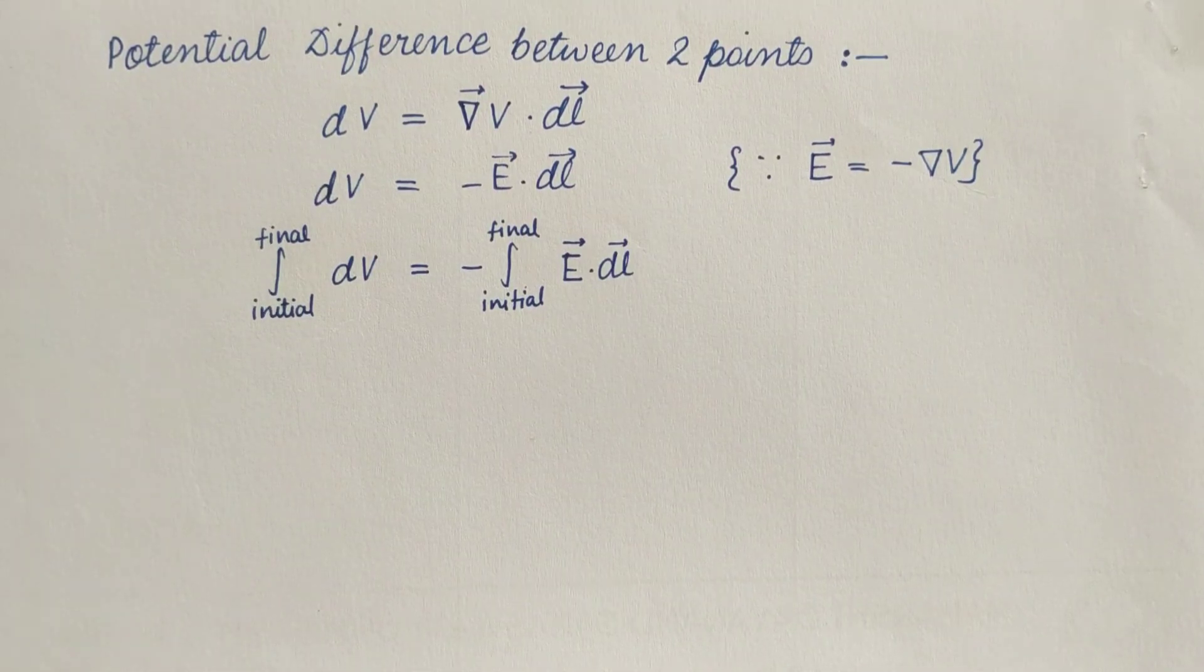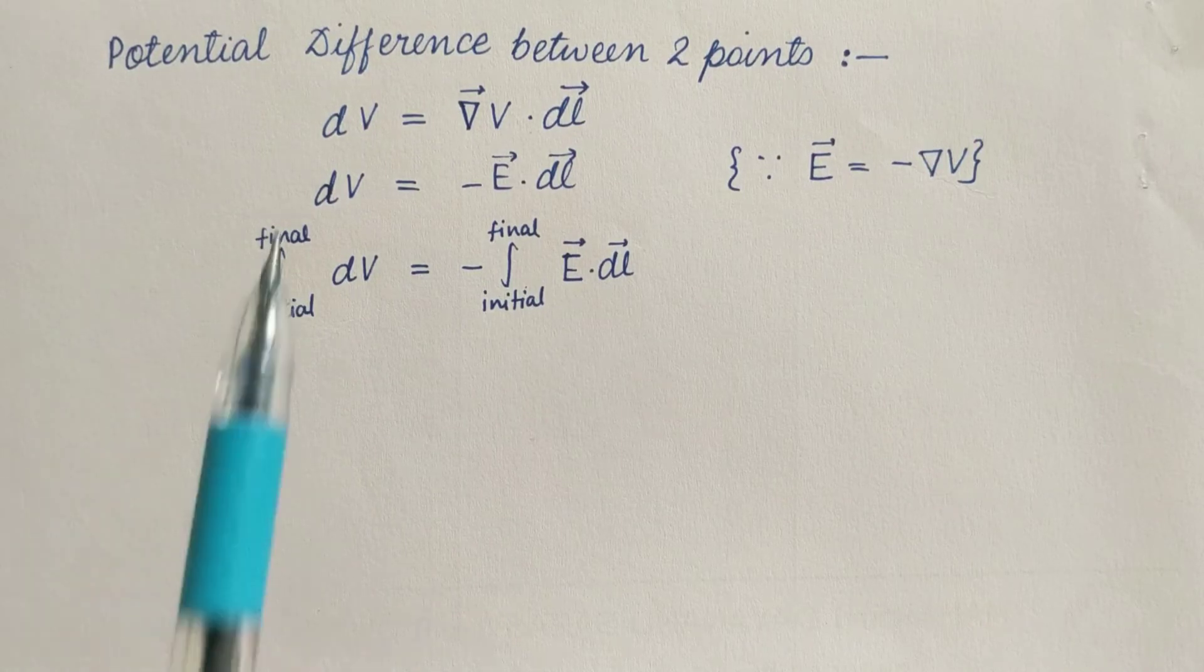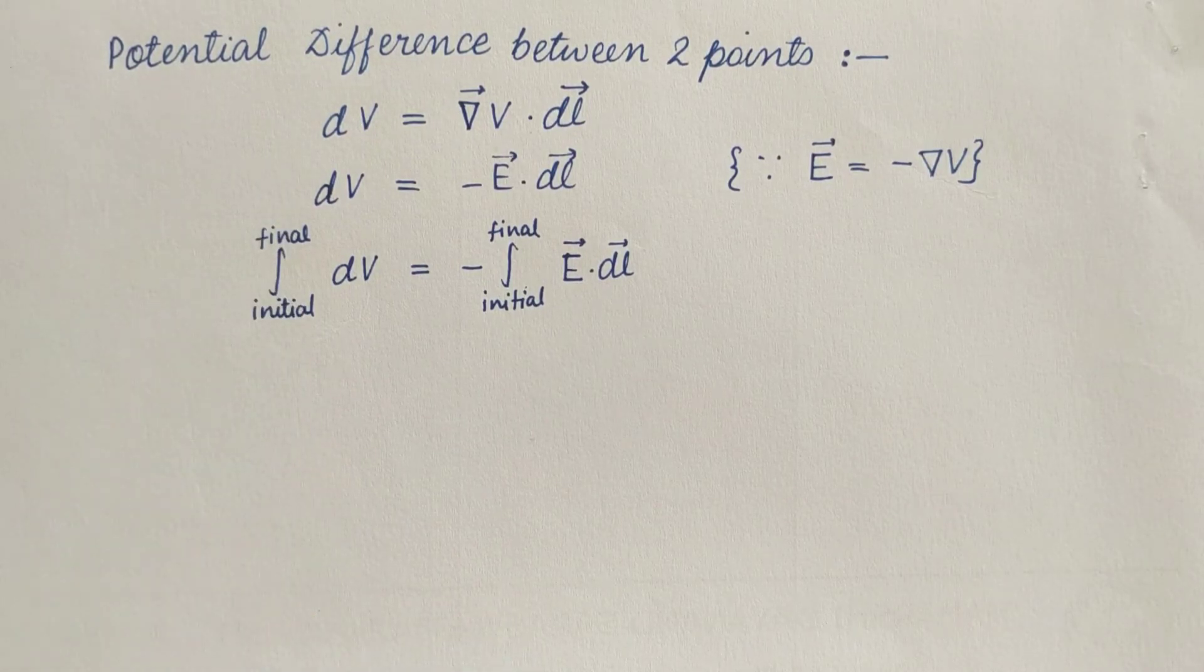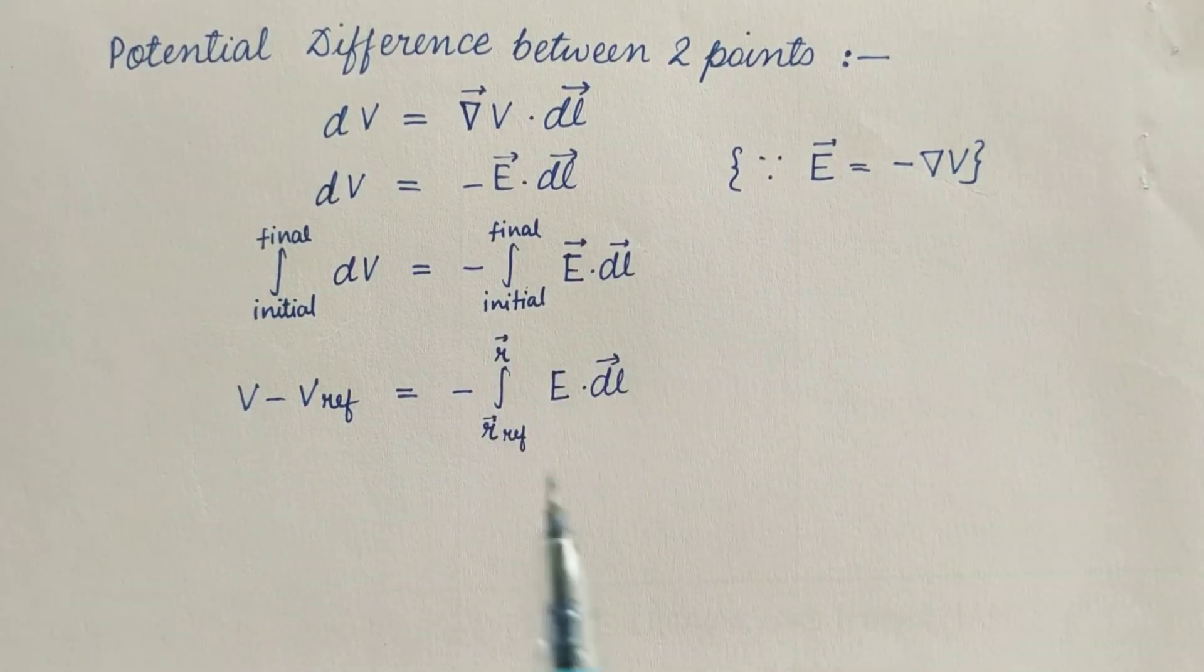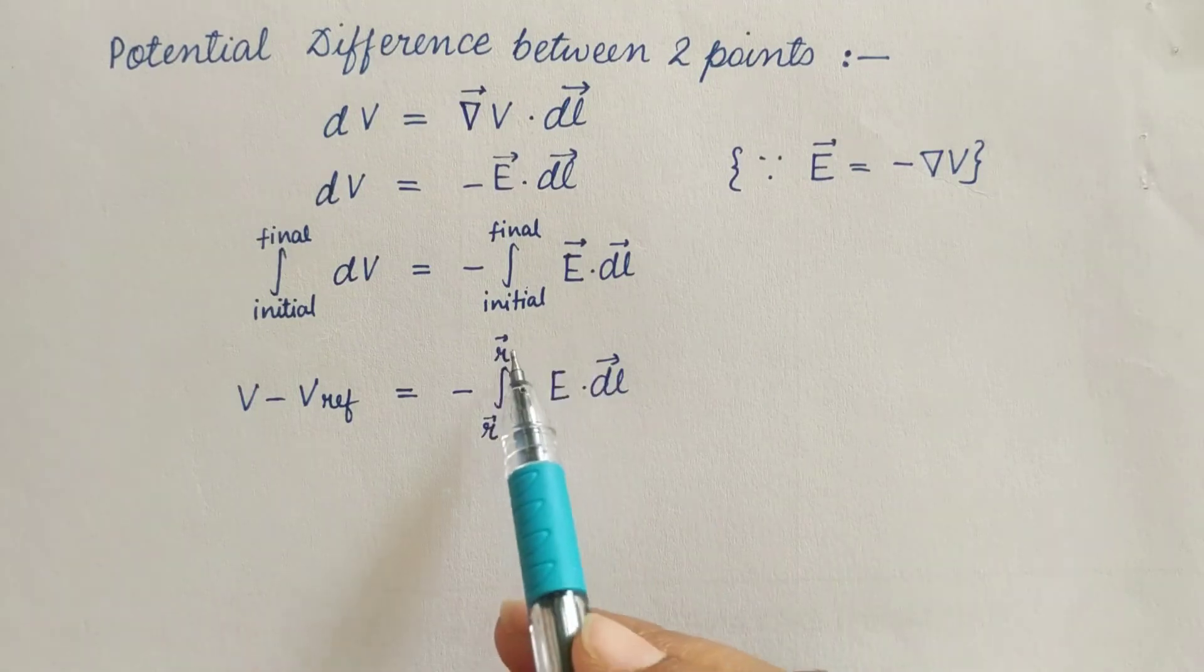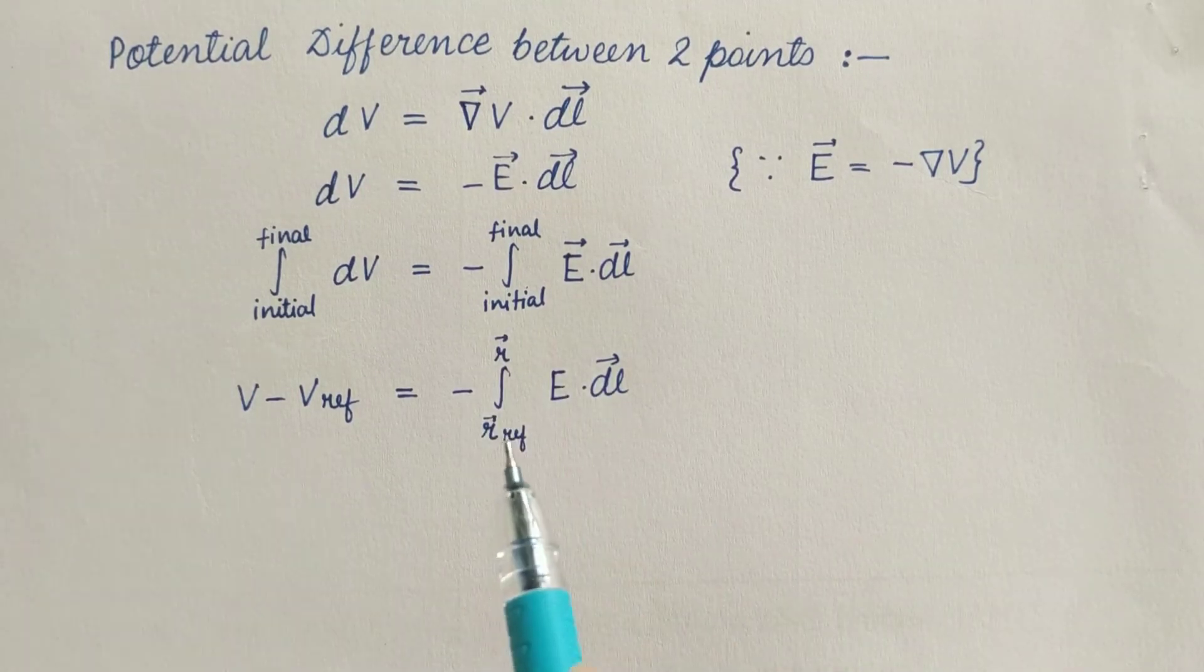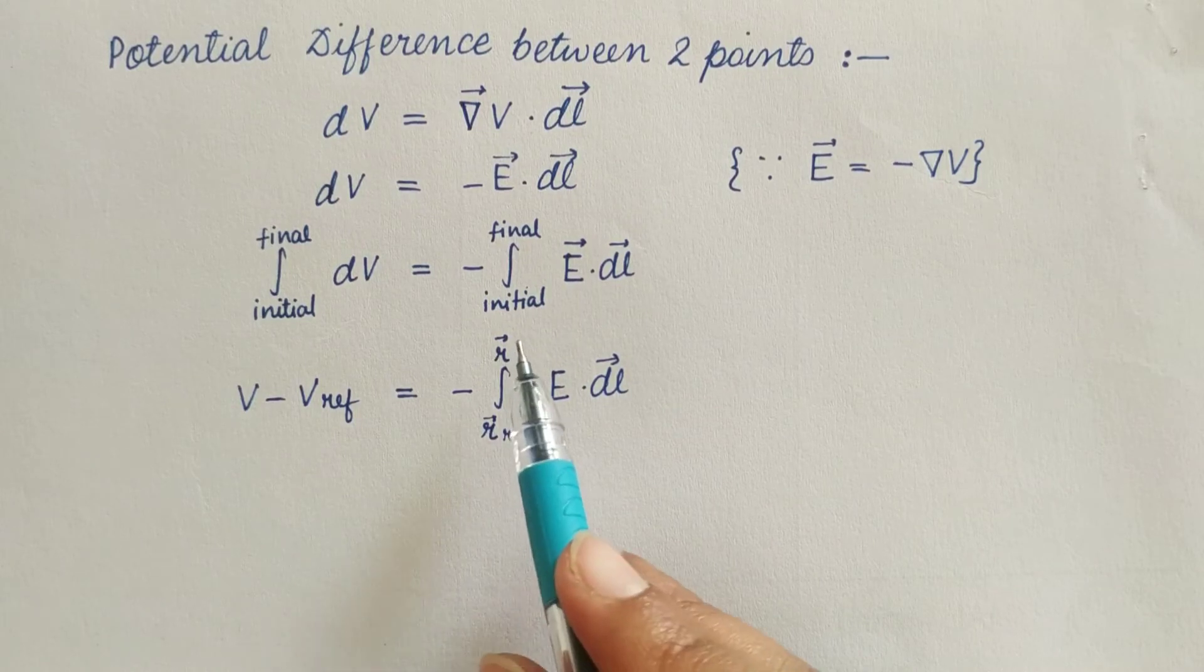Now we can take initial point as reference point and final point as the observation point. Then our equation will become this, where ref is for reference point and R is for observation point. From initial to final, that is reference point to the observation point.